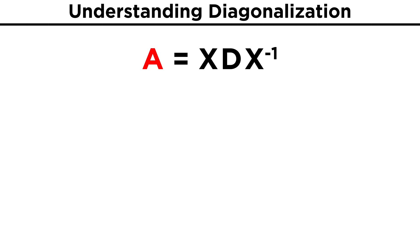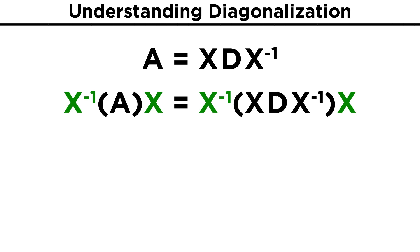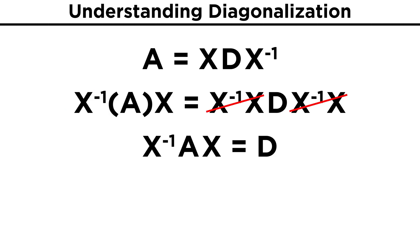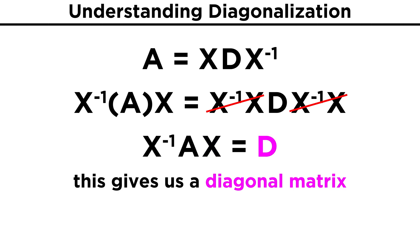For example, if we have matrix A, we will write it as X, D, X inverse, where D is a diagonal matrix. If we move the X matrices to the other side, we see that X inverse AX equals D. The X matrix is said to diagonalize A, because multiplying A in this way gives us the diagonal matrix D.